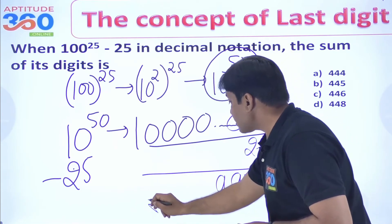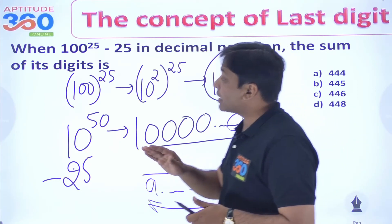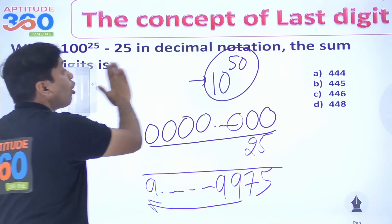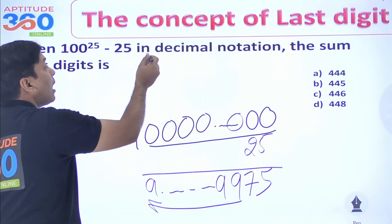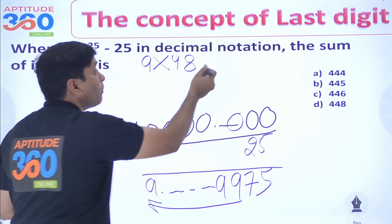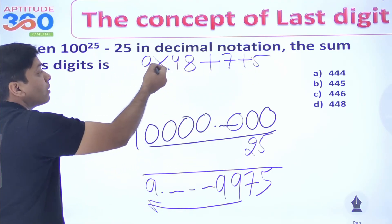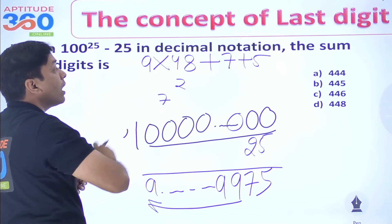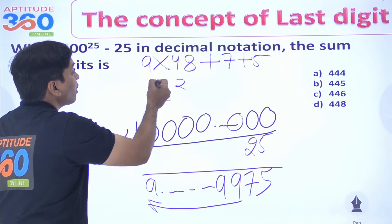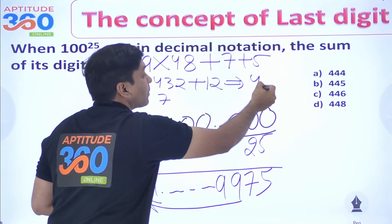We are writing 9 forty-eight times. We need to find the sum of all the digits. We have 9 written 48 times, plus 7 and 5. So the sum is 9 times 48 plus 7 plus 5. 9 times 48 is 432. 432 plus 7 plus 5 is 444. So the answer is 444. For such problems you do not even need the concept of cyclicity — this is a very good problem.